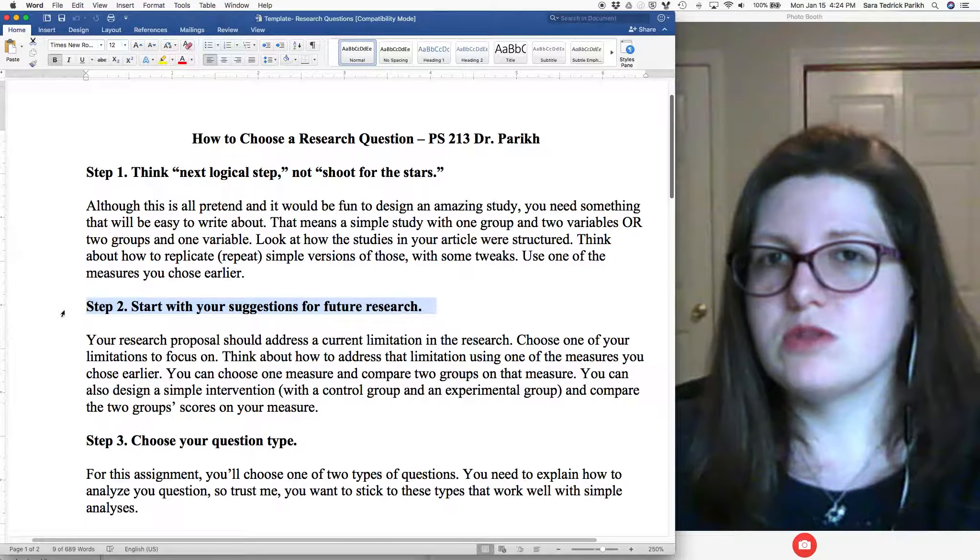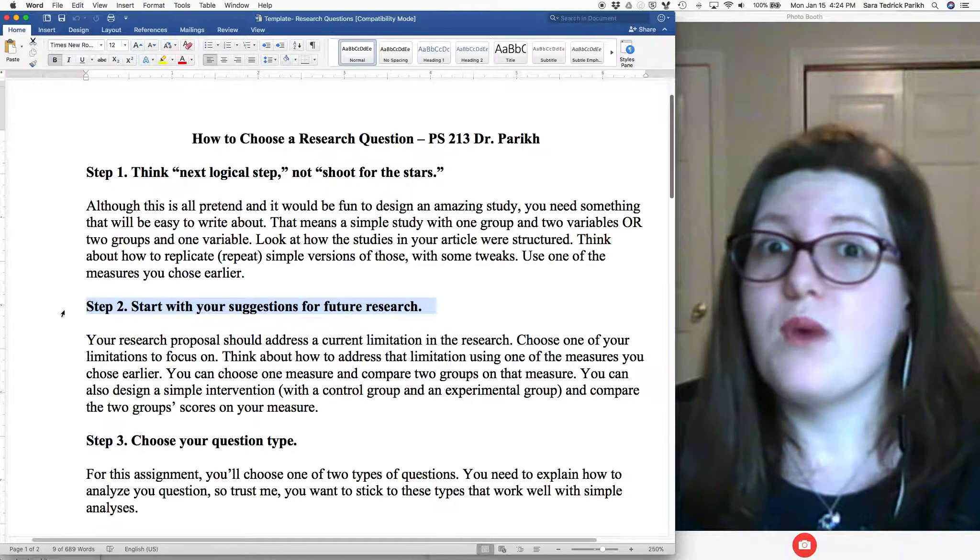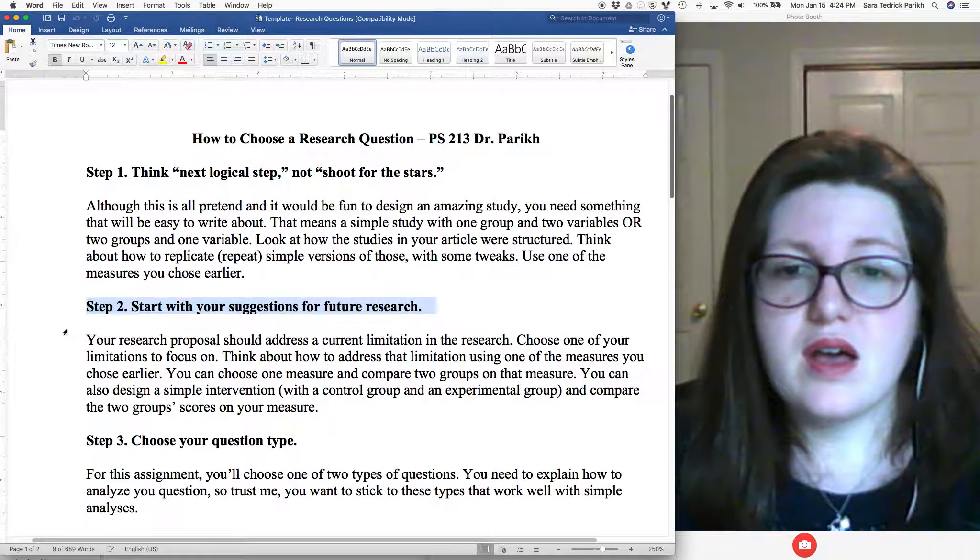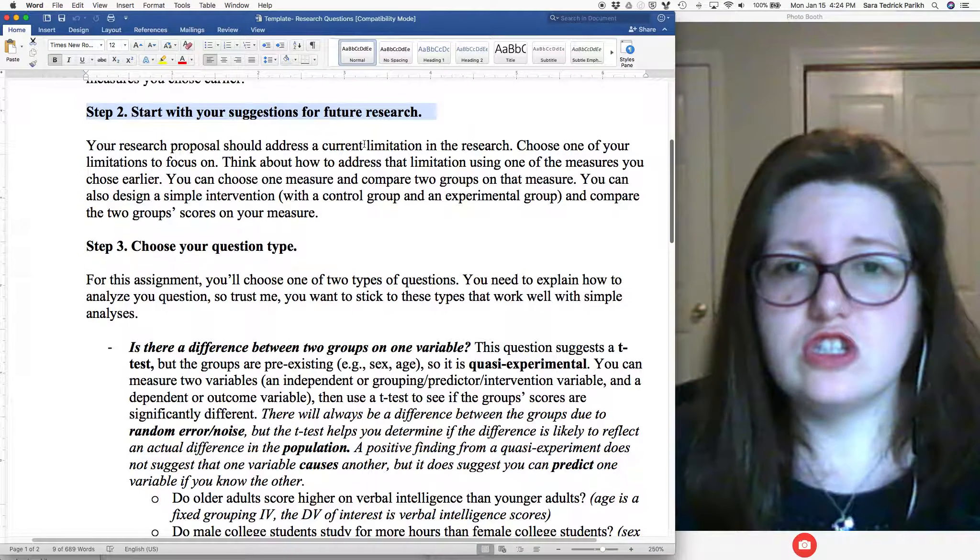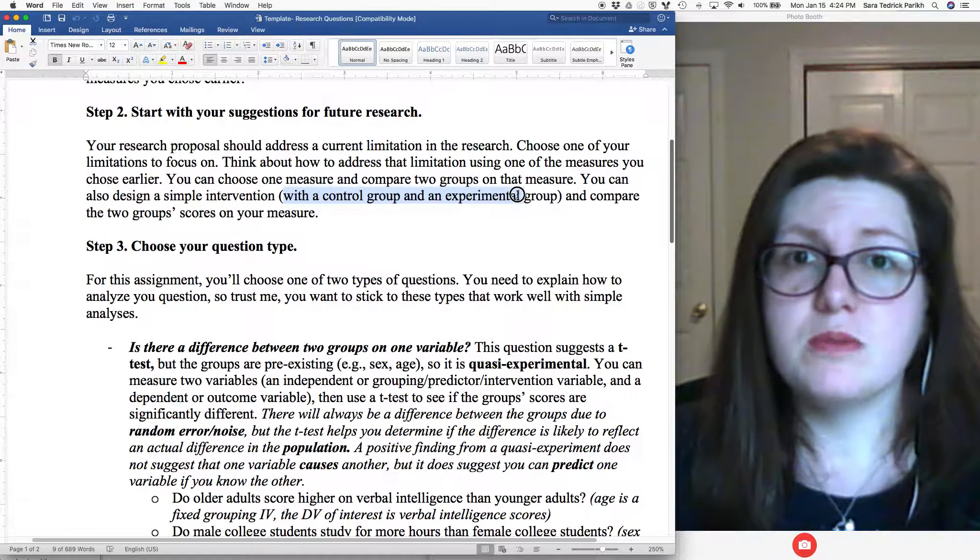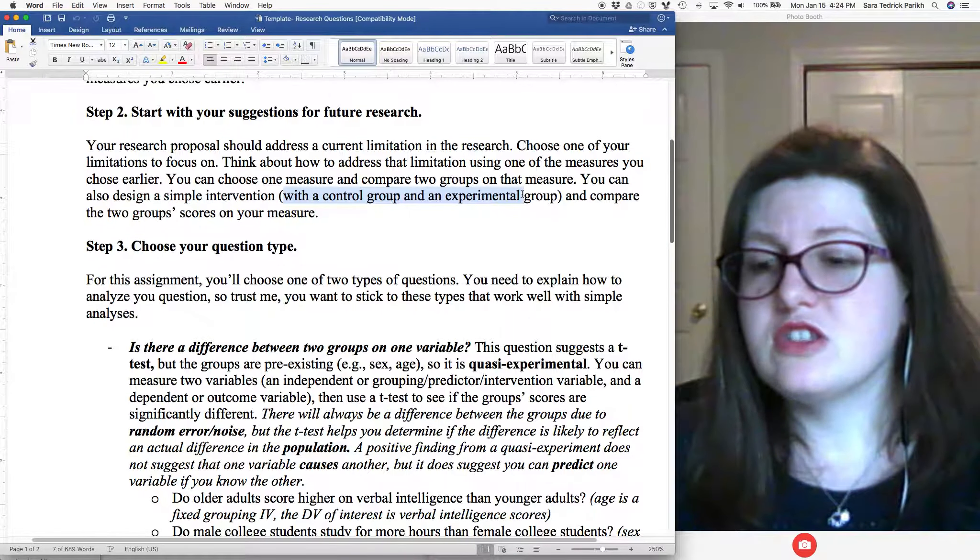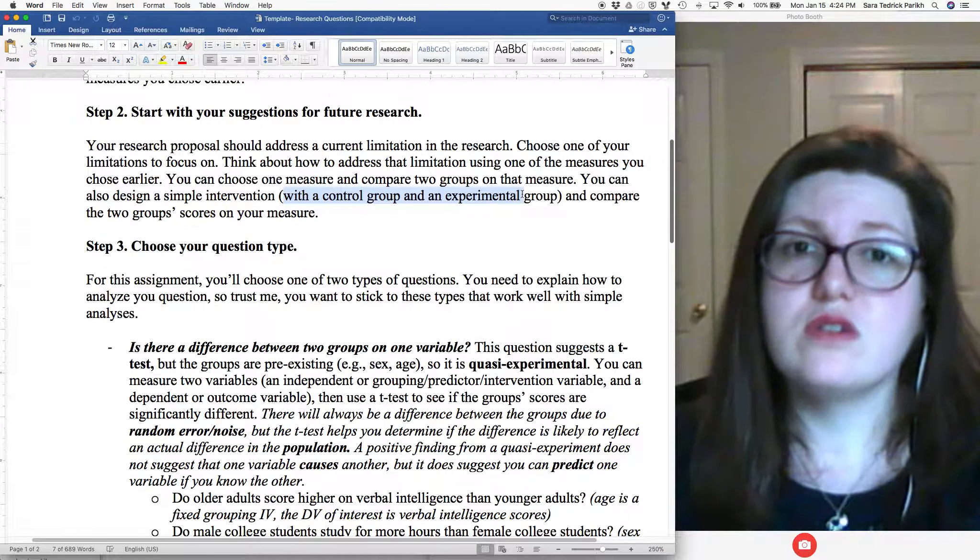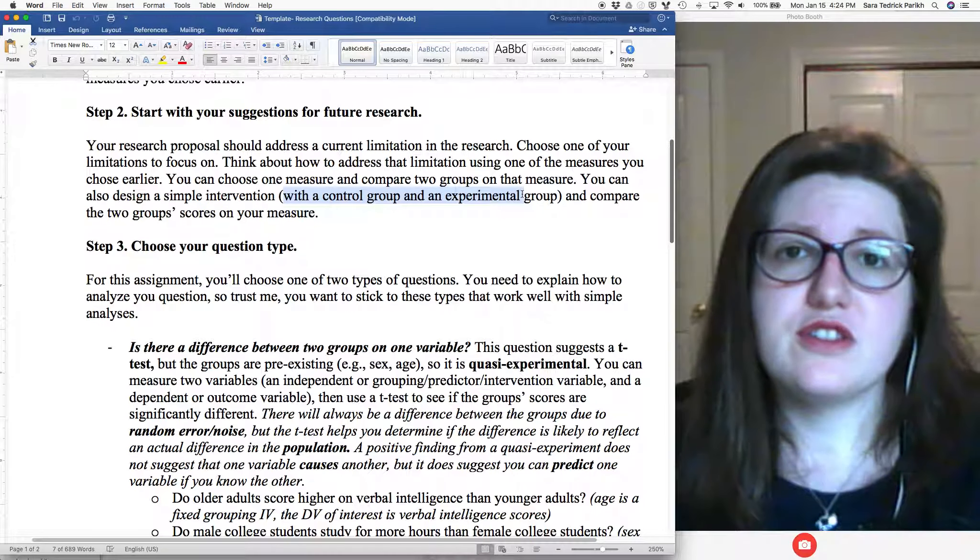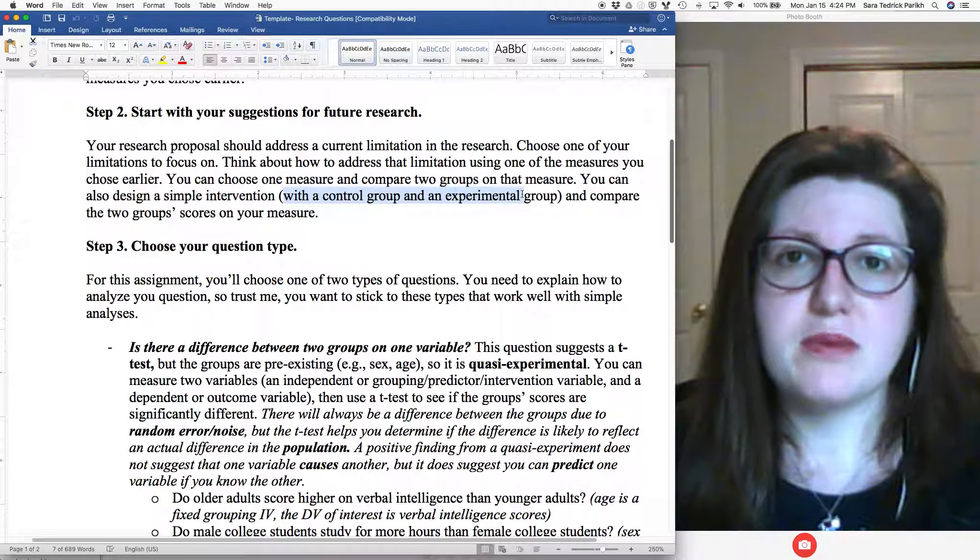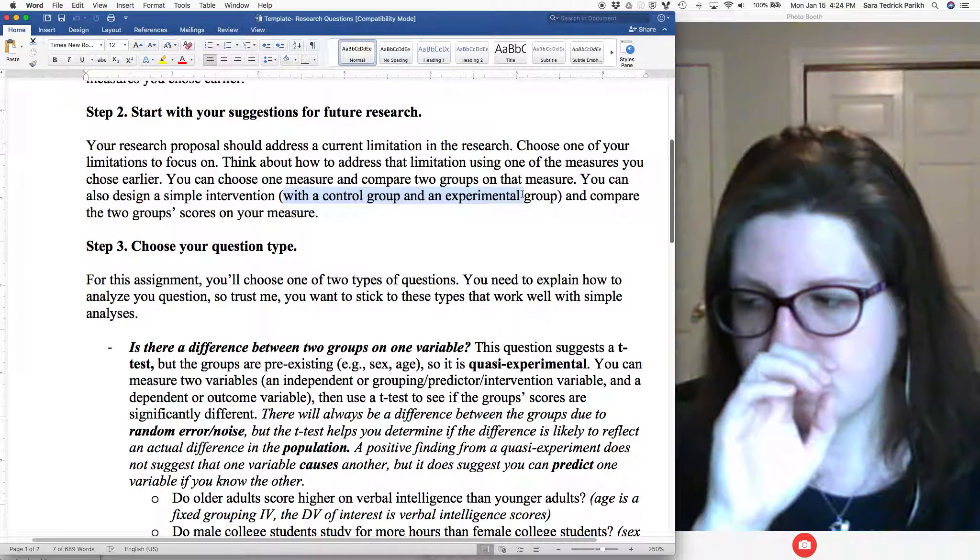If you're dividing them based on age, gender, race, medical history, psychological history—if you're dividing them into groups based on a thing, that's your first variable. You only get one more. You could also choose to design something with a control group, but then you can't compare men and women, because now your comparison is control and experimental.